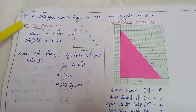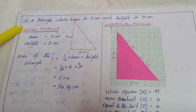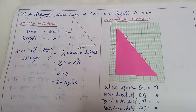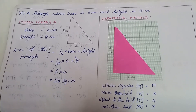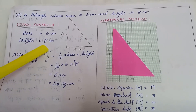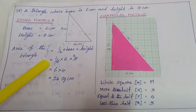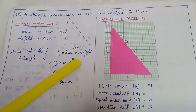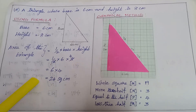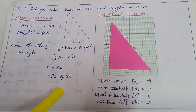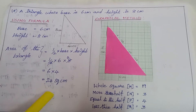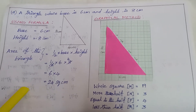The last one: a triangle whose base is 6 cm and height is 8 cm. By using the formula, base = 6 cm, height = 8 cm. The area of the triangle is equal to half into base into height. Half into 6 into 8, we get 24 square cm. By using the formula, we got 24 square cm as the area of the triangle.